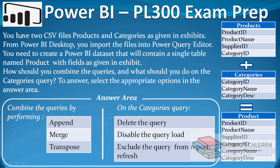The products table has four fields: product ID, product name, supplier ID, and category ID. The categories table has category ID, category name, and category description. We need to combine these two tables to derive a product table containing all fields from both. There are two questions: first, what action to perform for combining the queries — options are append, merge, or transpose — and second, what option to apply on the categories query: delete it, disable the query load, or exclude it from report refresh.